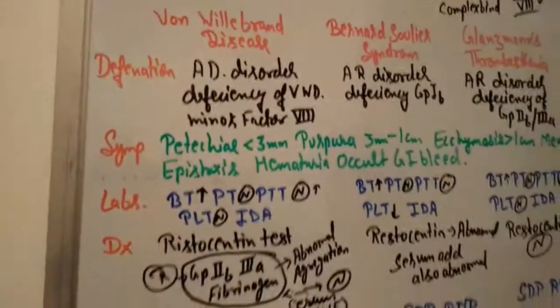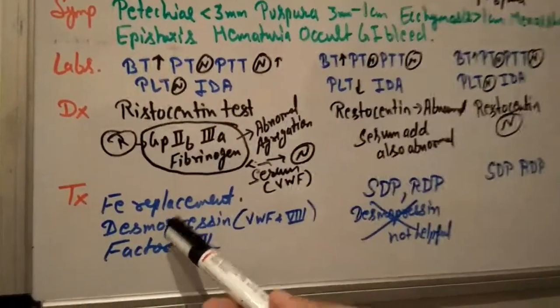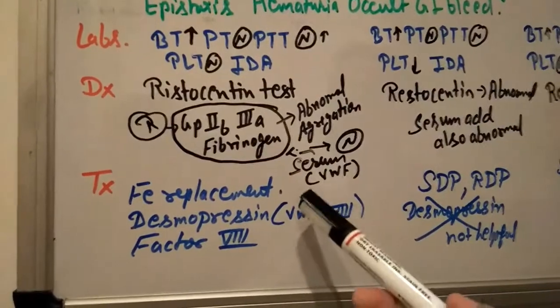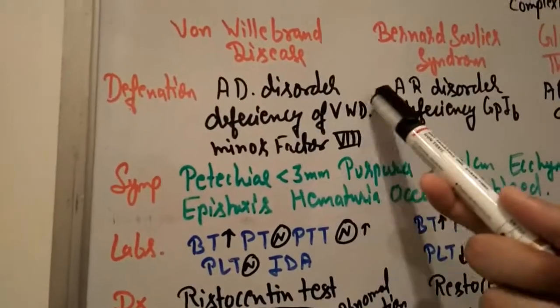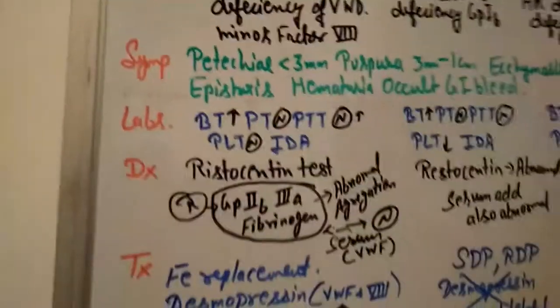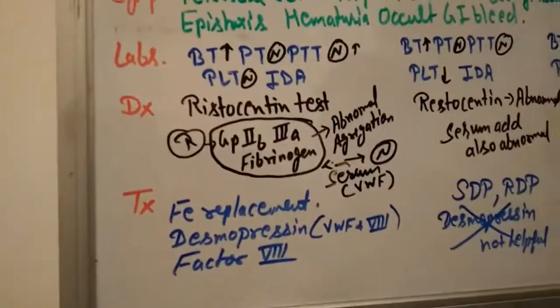How to treat von Willebrand disease? We need to replace iron because of iron deficiency anemia. We can give desmopressin to stop bleeding because desmopressin contains von Willebrand factor and factor 8, and there is deficiency of these. We can also give factor 8.